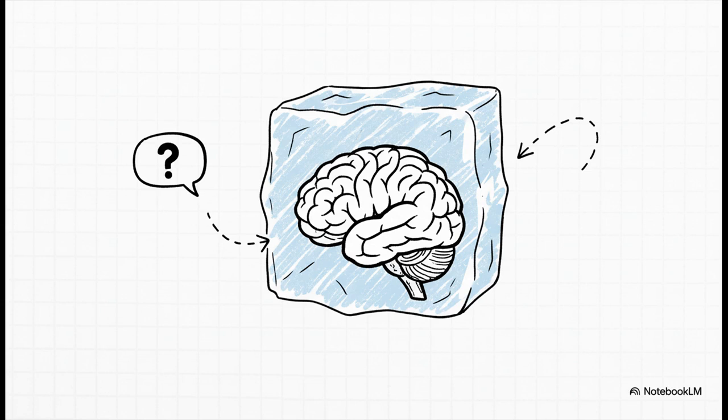Think about it. A large language model gets trained on this massive data set, right? But once that training is over, it's pretty much frozen in time. It knows an incredible amount about the world up to that point, but it can't form new, lasting memories. Any new info you give it, it only exists in that short-term conversation. The second that context window closes, poof, it's gone.